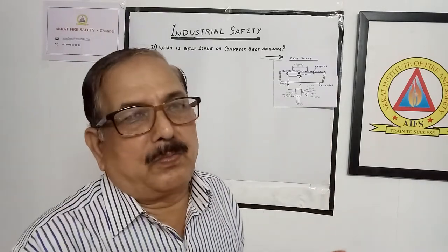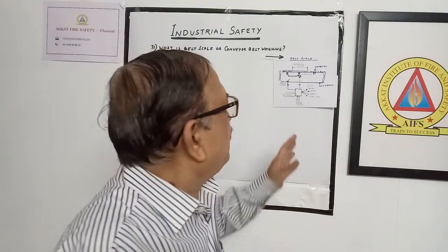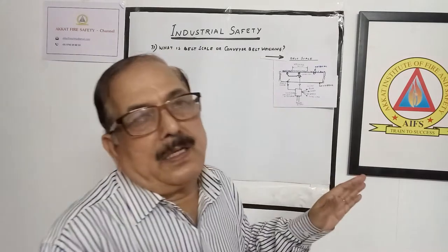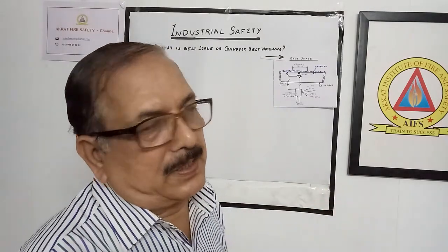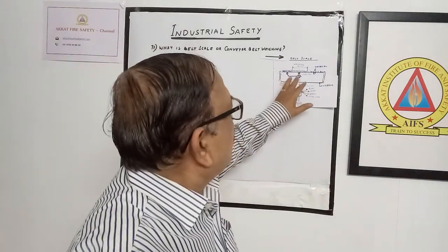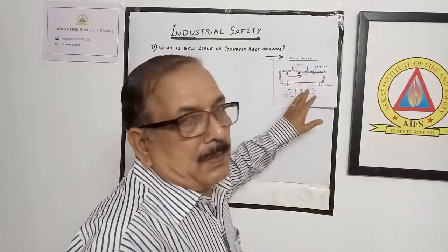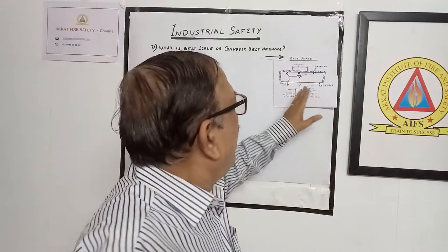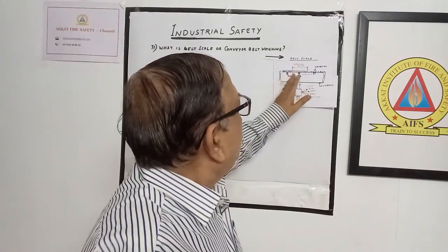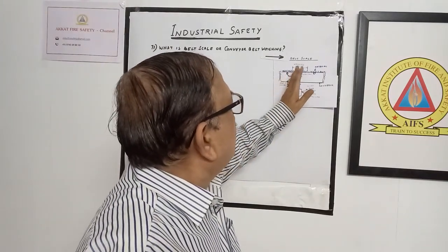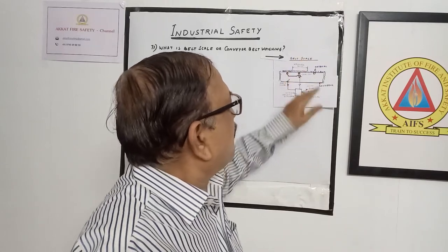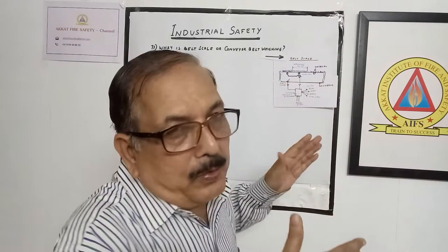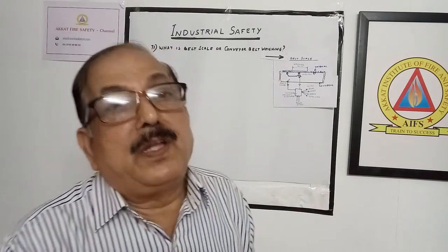Every portion of the weighing section has a load cell. We have to take a load cell. Suppose we have to talk about a 1-meter distance — 1-meter line is set in the same way. If we have to study the load cell, we have to take a load cell at 2 meters.